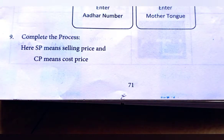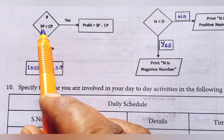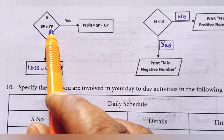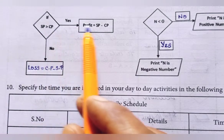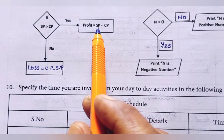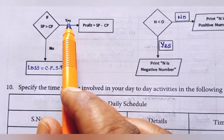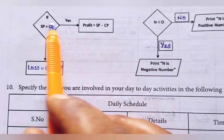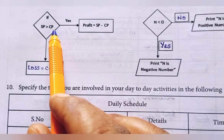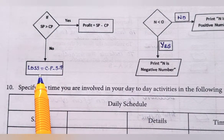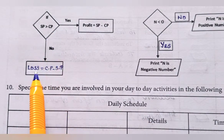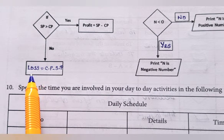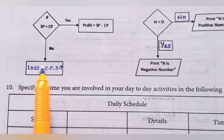Ninth question: complete the process. Here, SP means selling price and CP means cost price. First one: if SP selling price is greater than cost price, definitely we will get the profit and the formula to calculate profit is SP minus CP. So, this is yes and profit formula is selling price minus cost price. But if SP is greater than CP, then definitely it will not give loss. So, no option. Loss is equal to CP minus SP. Loss order formula.